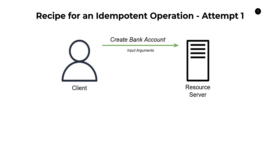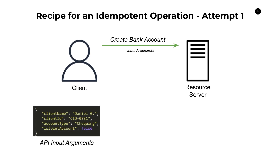We call that 'create bank account' API with input arguments. Those arguments probably look something like this: a client name, a client ID, an account type, and some other details like whether or not it's a joint account. These API arguments aren't going to change from request to request, even if we're throwing retries at the resource server. So we can leverage these input arguments because they are unique and consistent across multiple different retries.